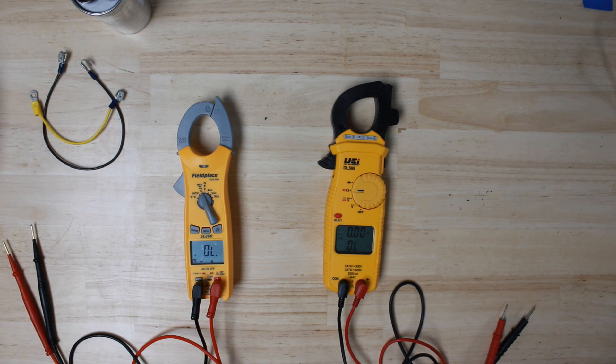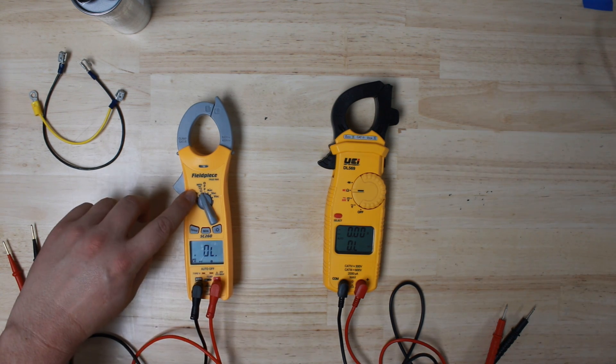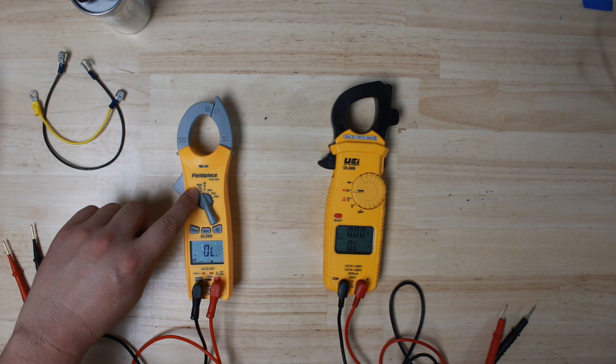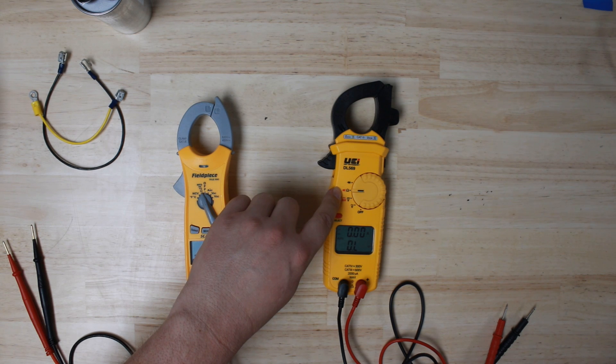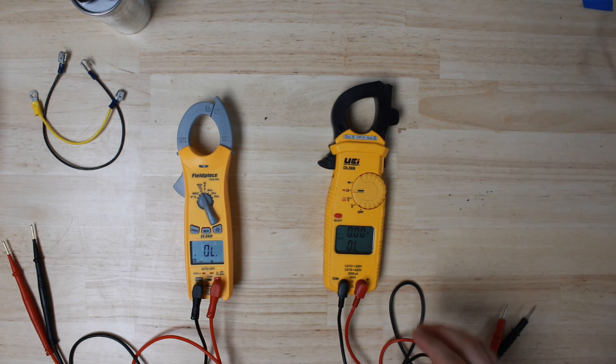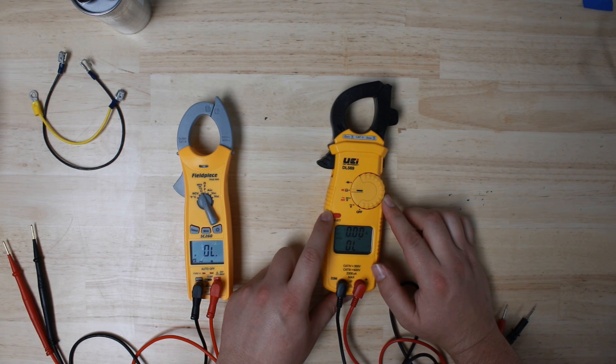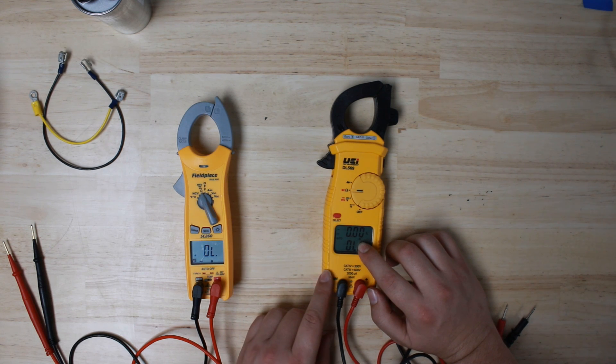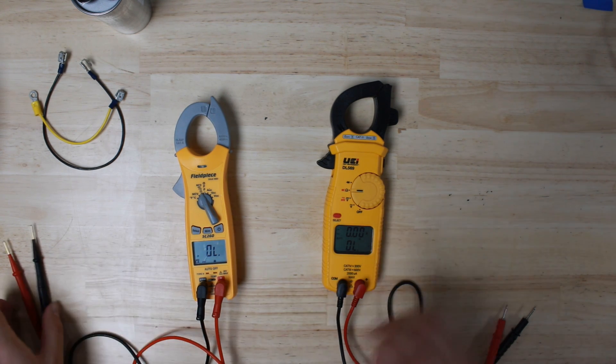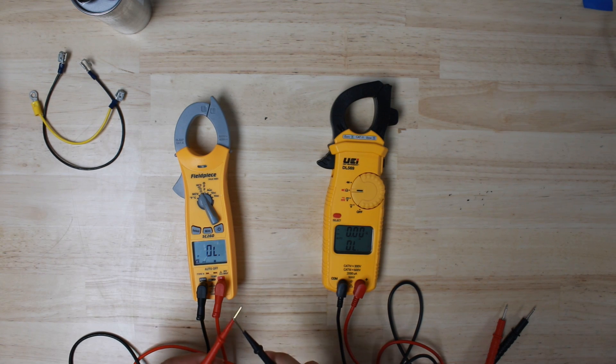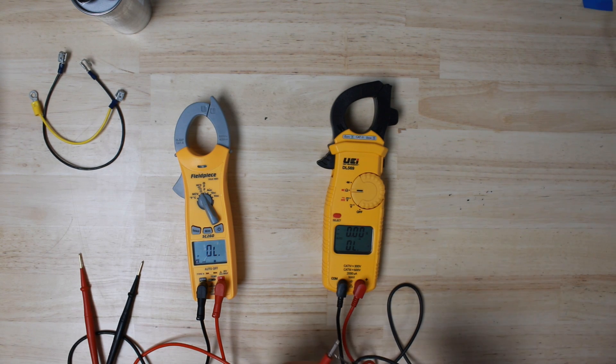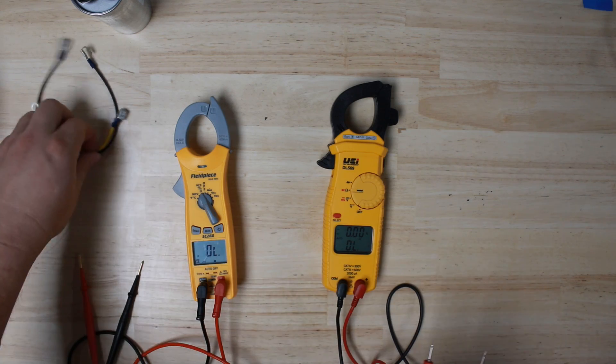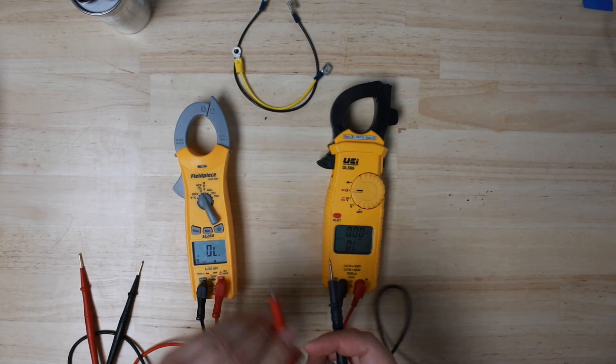This will also be the setting you use to measure continuity. For the Fieldpiece, there's that little dot with some lines next to it, and this one also has a symbol of a speaker making noise. That's a tone that you'll get. You might have to push select until you see that same symbol come up on the UEI. But you can always just test by putting the two leads together.